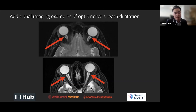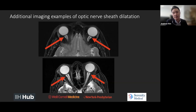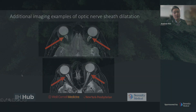Practically speaking, a lot of times we'll call this qualitatively. But just to give you an idea, a lot of the papers out there mark five to six millimeters in diameter as the upper limits of normal threshold for optic nerve sheaths — so just keep that in mind.